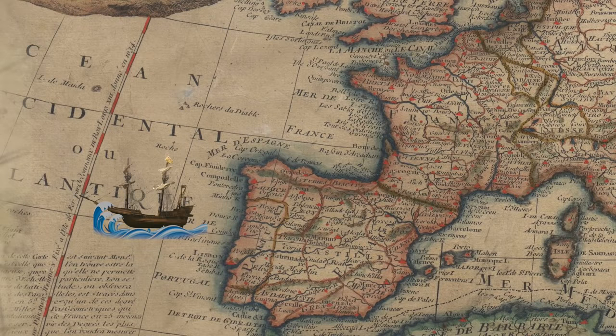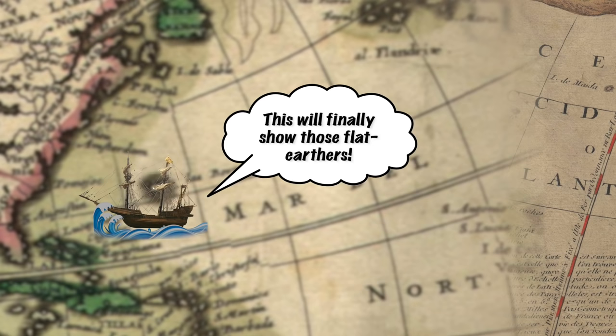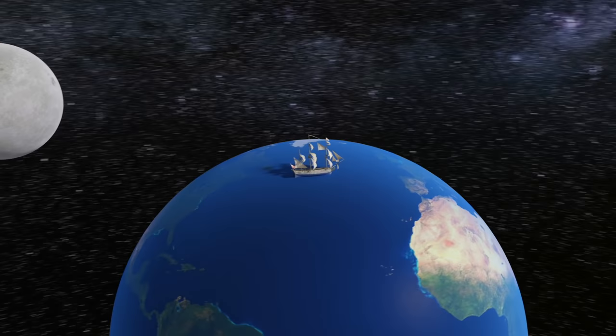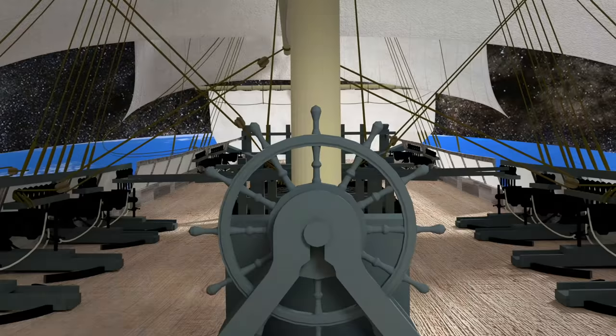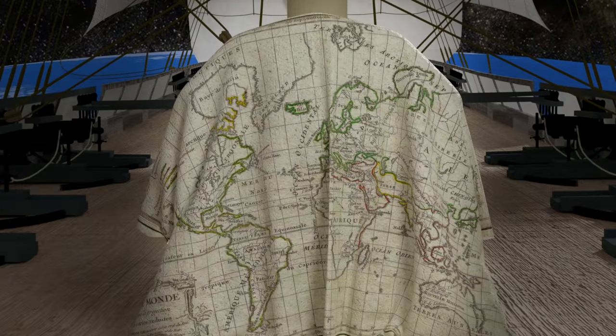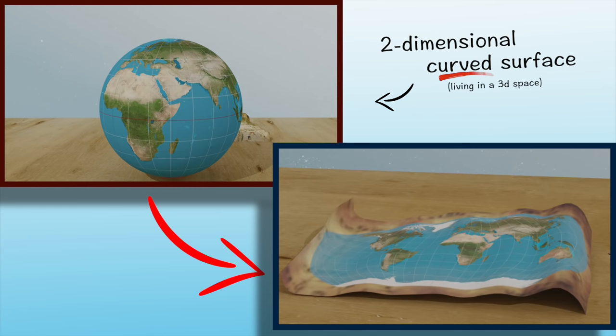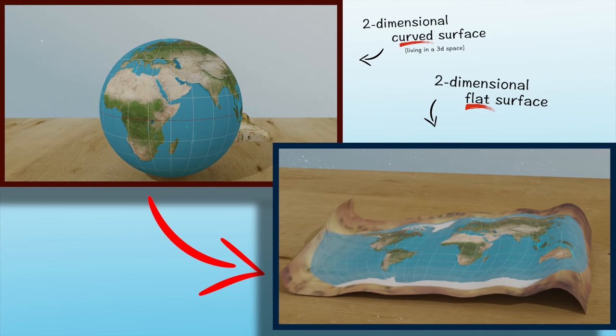When European seafarers and navigators realized that the world was round, they needed a way to depict a spherical surface on a flat piece of paper that they could hold in their hands. That is, they had to take a two-dimensional curved surface and map it onto a two-dimensional flat surface.